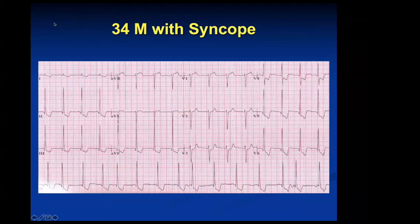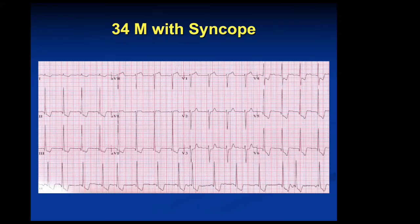A 34-year-old gentleman with syncope. What can cause a previously healthy 34-year-old to have syncope — if it was a cardiac thing? Someone says hypertrophic cardiomyopathy — yes, that's right. So you go into this EKG with that differential.